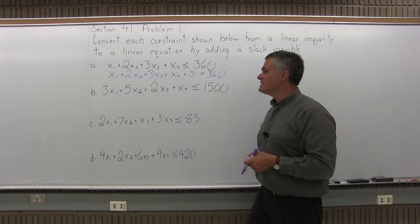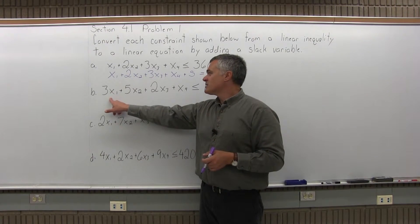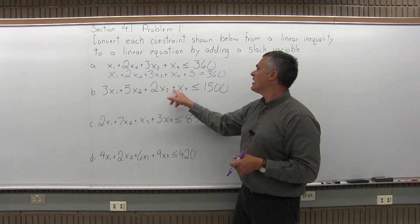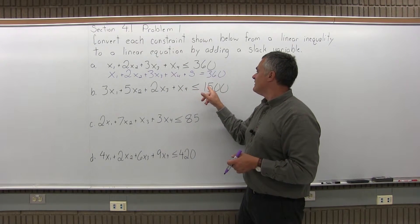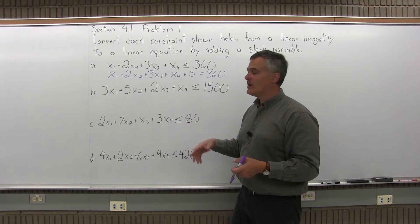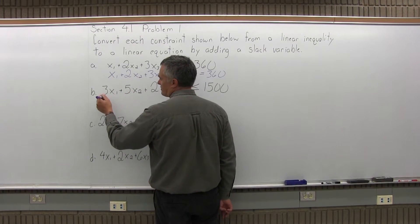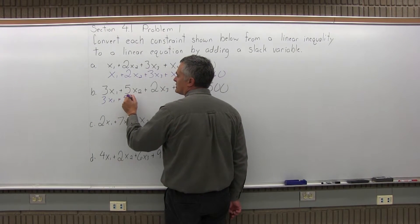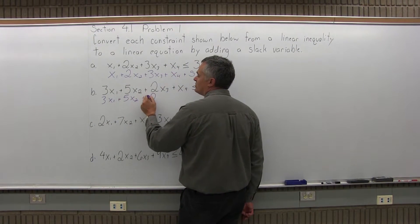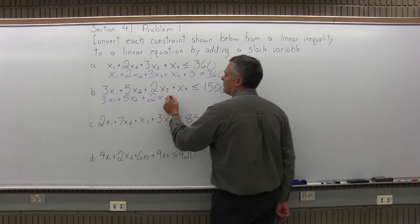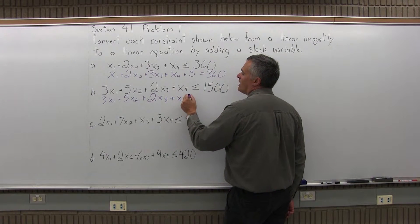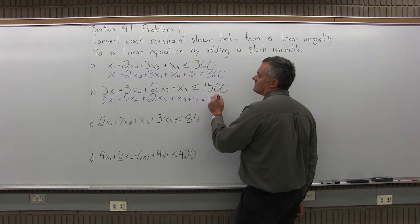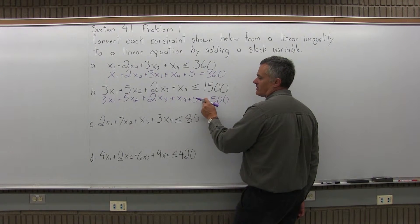And then the rest of them are the same. Part B says convert 3x1 plus 5x2 plus 2x3 plus x4 is less than or equal to 1500 into an equation. So I'm going to have the same values right through, 3x1 plus 5x2 plus 2x3 plus x4, but now plus s, and now it equals 1500, and now it's a linear equation.